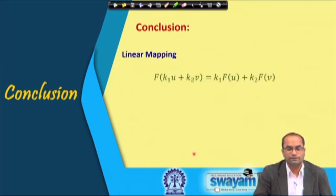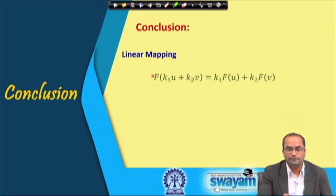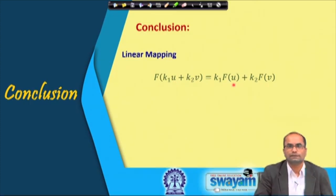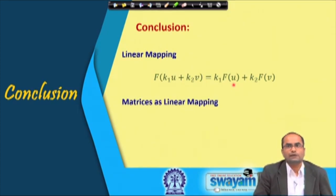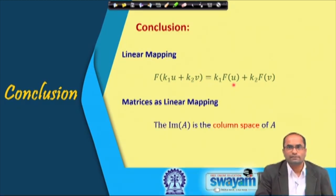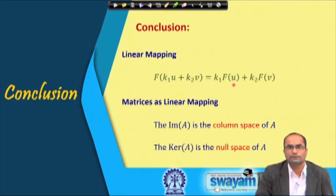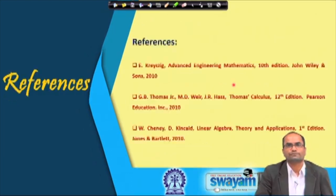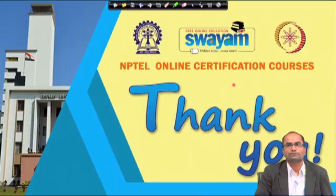In conclusion, we have discussed linear maps: to prove a map is linear, apply F on k₁U + k₂V and verify we get k₁·F(U) + k₂·F(V). Matrices of order m×n are linear maps from Rⁿ to Rᵐ. The image of A is the column space of A, and the kernel of A is the null space of A. Thank you for your attention.